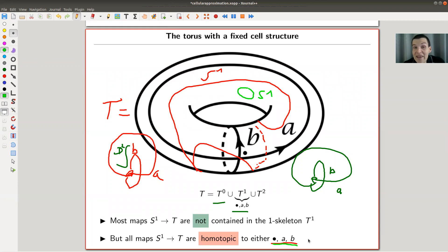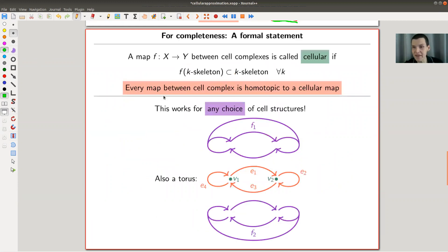So that's what I mean by writing 'something in the one skeleton.' All maps are homotopic to something that sits completely in the one skeleton. Most maps don't sit in the one skeleton, but all S^1's kind of in the end are homotopic to something that sits in the one skeleton. And yeah, that's almost basically the statement.